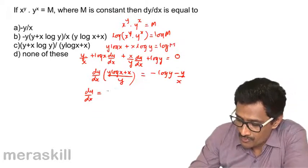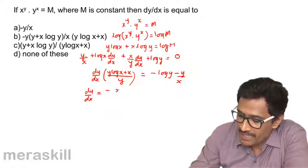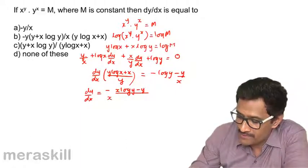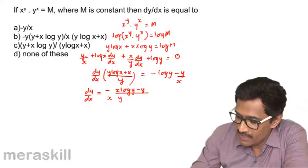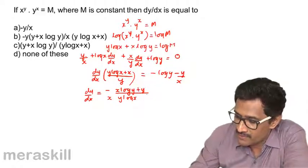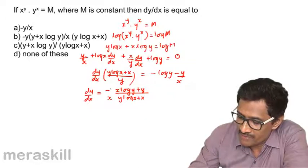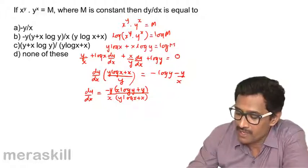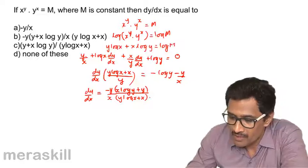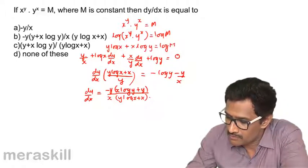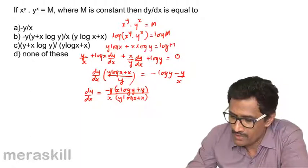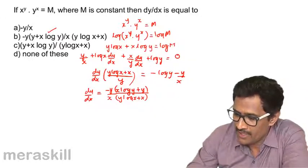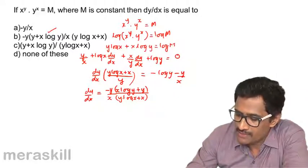Therefore, dy/dx equals minus (x log y + y/x) divided by (y log x + x/y). Simplifying by multiplying numerator and denominator: dy/dx equals minus y(x log y + y) divided by x(y log x + x). This is option B.